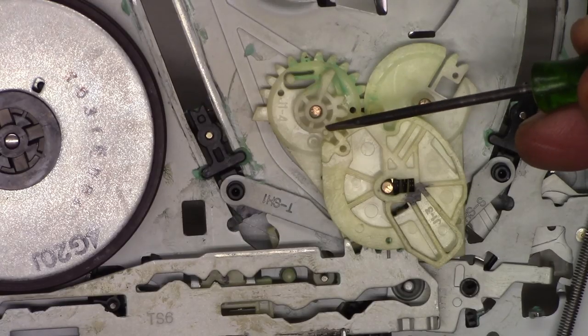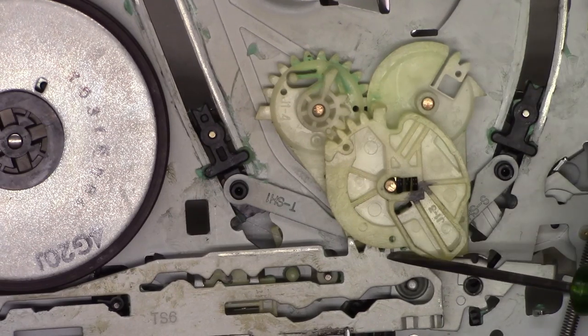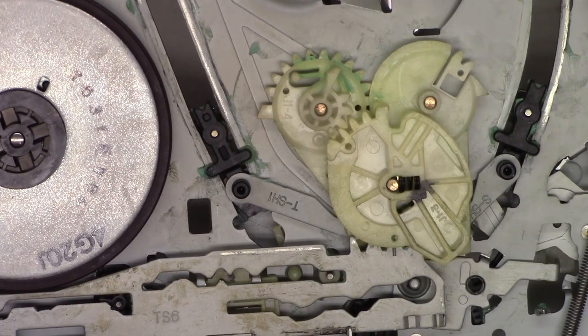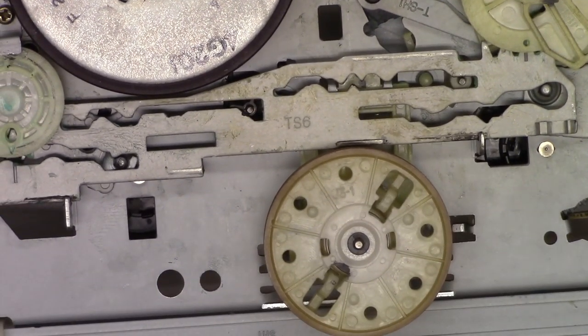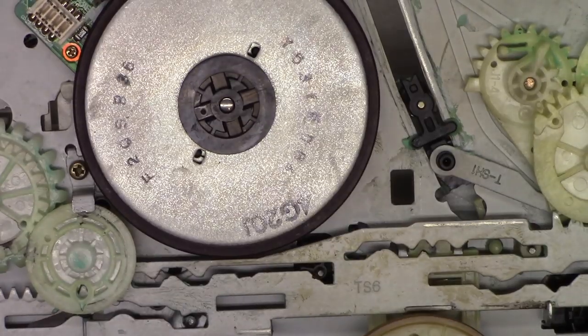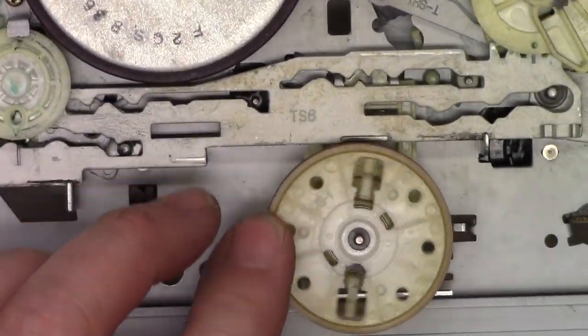So everything looks good in the mechanism on the bottom side. We have the two notches lined up right here. We have the timing mark lined up with the line right here. So everything should, theoretically, work out. So let's go ahead and clean the capstan belt pulley as well as the take-up pulley. And we'll use the acetone.